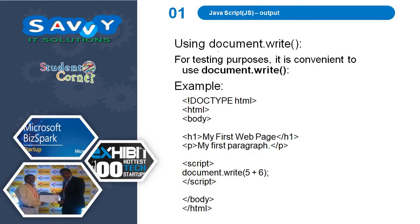The next one is document.write. Simply use document.write with the desired value — same concept with small changes. For testing purposes it is convenient to use document.write. The method directly shows how we are using it.